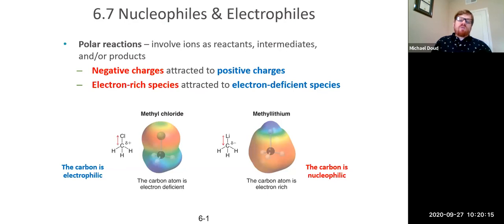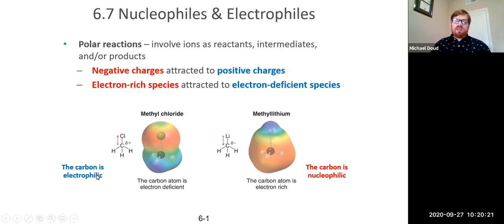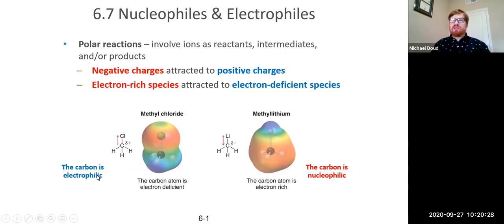We call this an electrophilic region. The way you can remember that is: electrophilic means electron-loving. Electro is for electron; electrons are negatively charged; philic means loving. So an electrophilic site loves negative charges — and what loves negative charges more than positive charges?